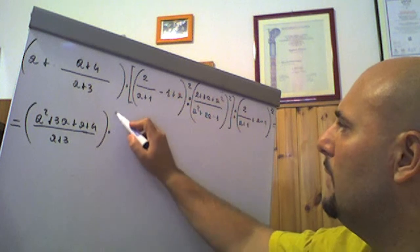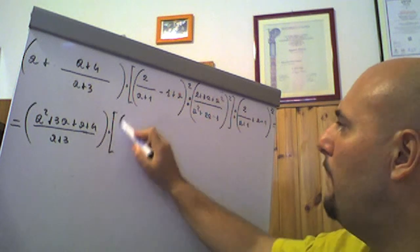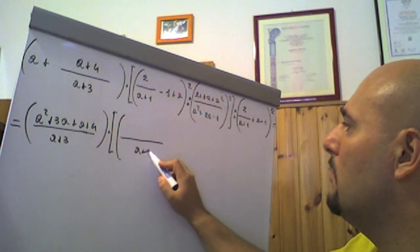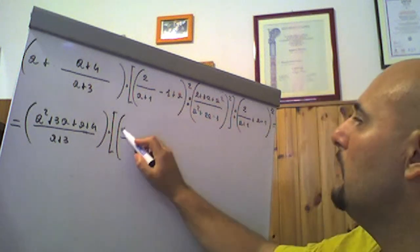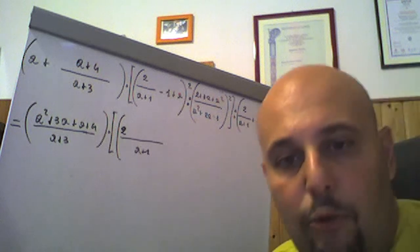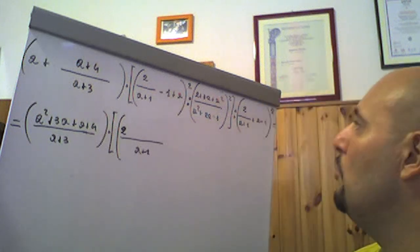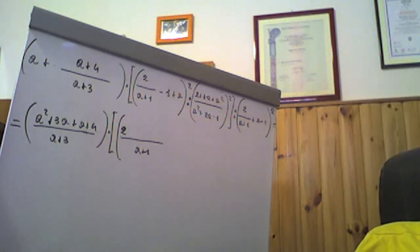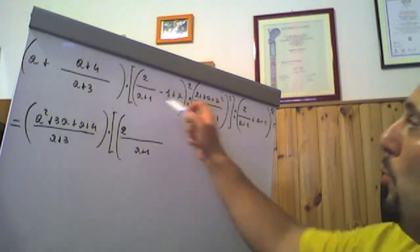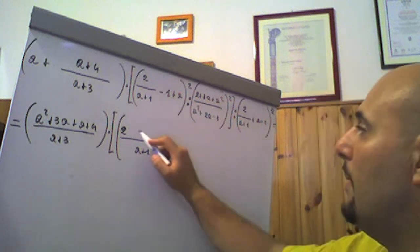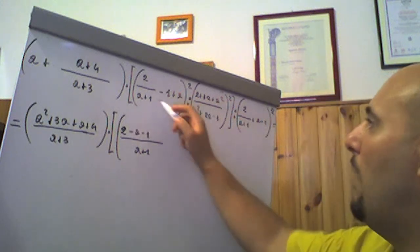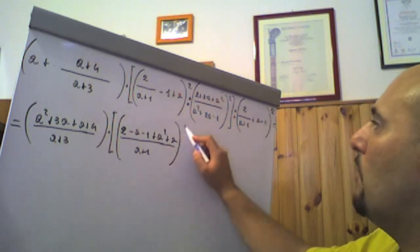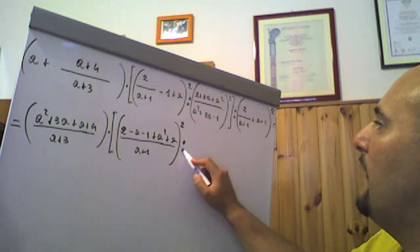Che moltiplica? Aperta la tonda. Andiamo a fare qui il minimo comune multiplo, che naturalmente è a più 1. A più 1 diviso a più 1 fa 1, per 2: 2. Attenzione qui c'è un meno 1 e un più a. Allora a più 1 per... attenzione che è meno 1 più a. Quindi abbiamo che meno 1 va moltiplicato per più 1, quindi abbiamo meno a meno 1; e poi quel più a va moltiplicato per più 1, quindi a per a è a al quadrato, a per 1 è a. Occhio a questo possibile errore che si può venire a creare.